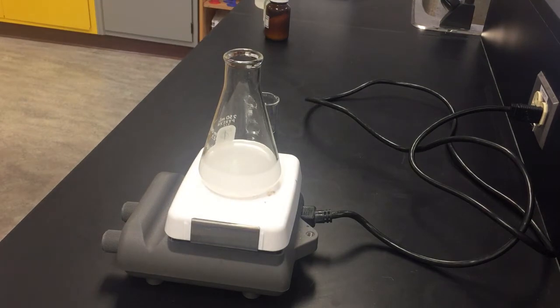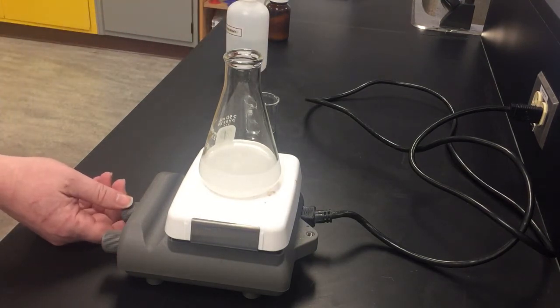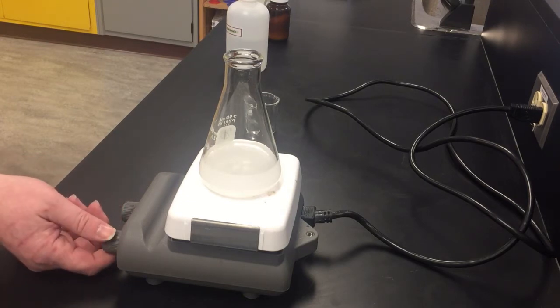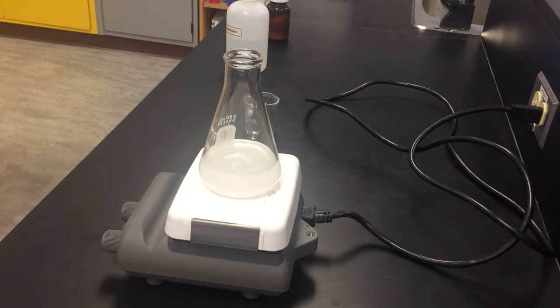About 100 milliliters. Doesn't have to be precise because we are just making a saturated solution. We are going to stir that for a while until all the potassium hydrogen tartrate that wants to dissolve will dissolve.